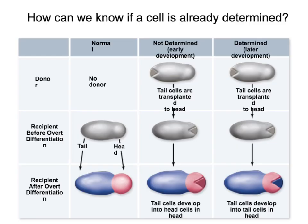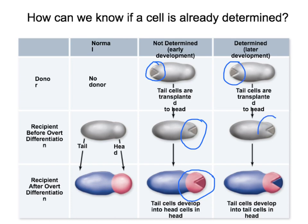We can test whether a cell has already been determined even if we cannot see it by the change in morphology. If we transplant cells from the tail of the embryo into the head of the embryo, and those cells develop as the cells where they were placed, that means they were not yet determined. On the other hand, if those transplanted tail cells still develop as tail cells even when placed in the head, that means those cells had already been determined and were committed to becoming tail cells.